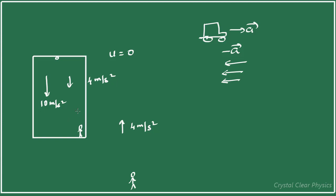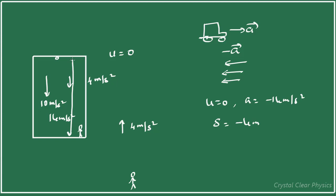So from the elevator's point of view, inside the elevator, the acceleration due to gravity is 14 meters per second squared. Initial velocity u is 0, acceleration is minus 14 meters per second squared, and the displacement is minus 4 meters because the bulb comes down 4 meters — taking up as positive. Applying S equals ut plus half at², I get t equal to the square root of 4/7 seconds.